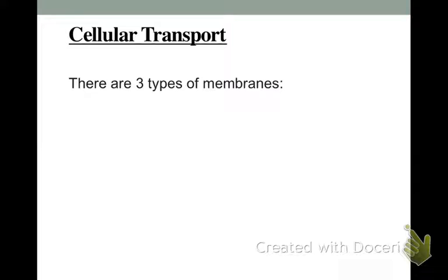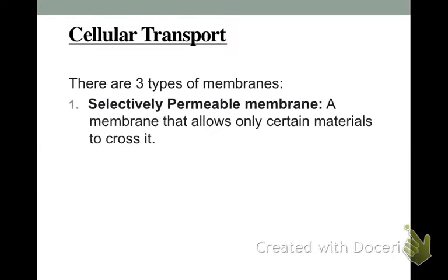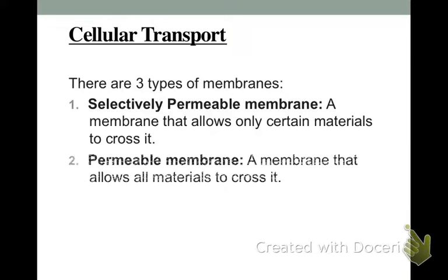You have three types of membranes in all cells. The first is selectively permeable. Selectively permeable - remember, permeability means it allows things to enter and exit - only allows certain substances to enter and exit. Sometimes we also call it semi-permeable, so you'll hear both terms; they mean the same thing. Permeable means anything can cross the membrane, both going in and out.